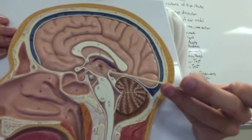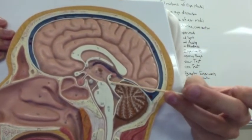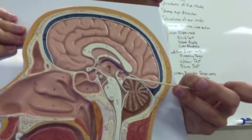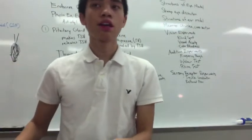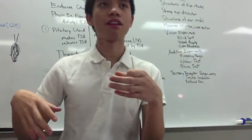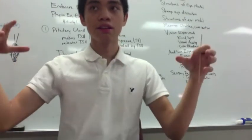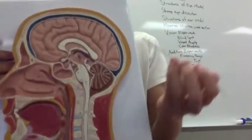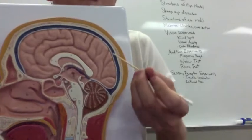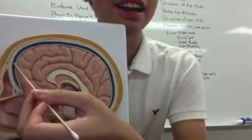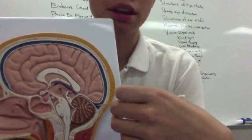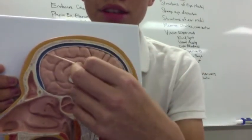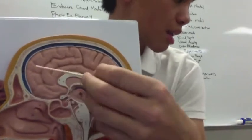You have your corpora quadrigemina, which is this little section right here. Then there's this little blue section called your superior sagittal sinus — this is where your CSF, or cerebrospinal fluid, flows through around your brain.